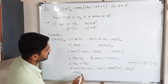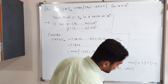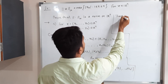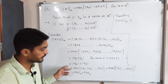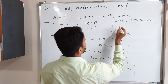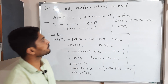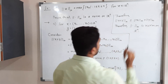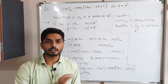Therefore, ‖x + y‖∞ ≤ |xₚ| + |yₚ| ≤ ‖x‖∞ + ‖y‖∞. So norm infinity satisfies all four conditions, and therefore we can declare that ‖·‖∞ is a norm on ℝⁿ. This completes the proof.